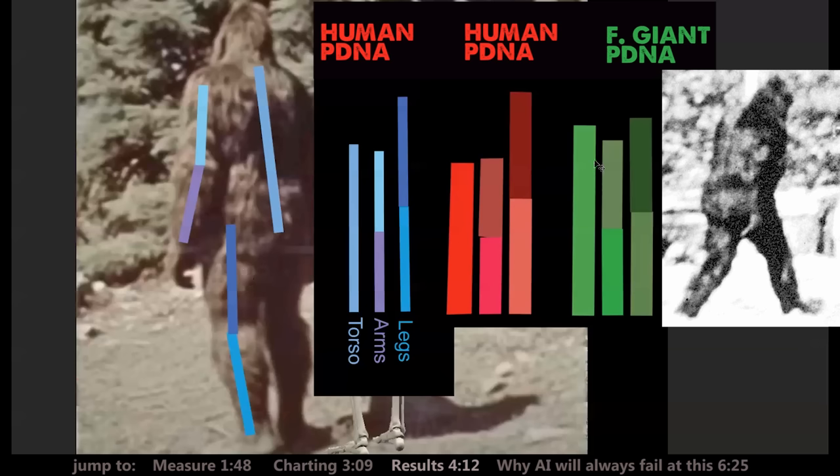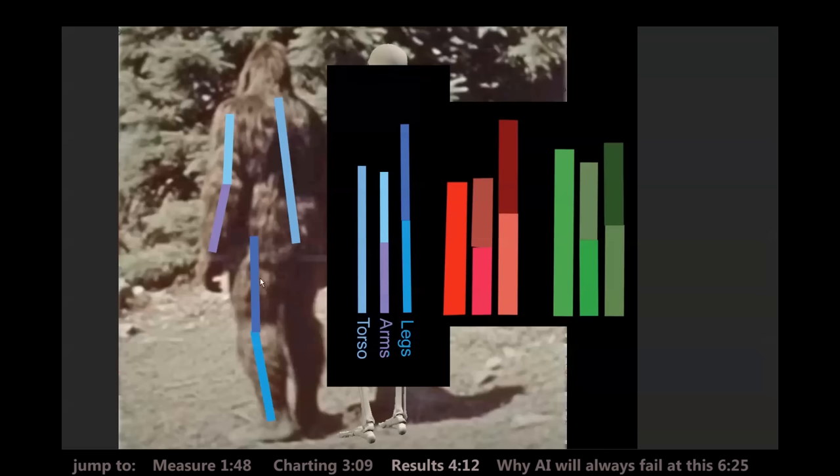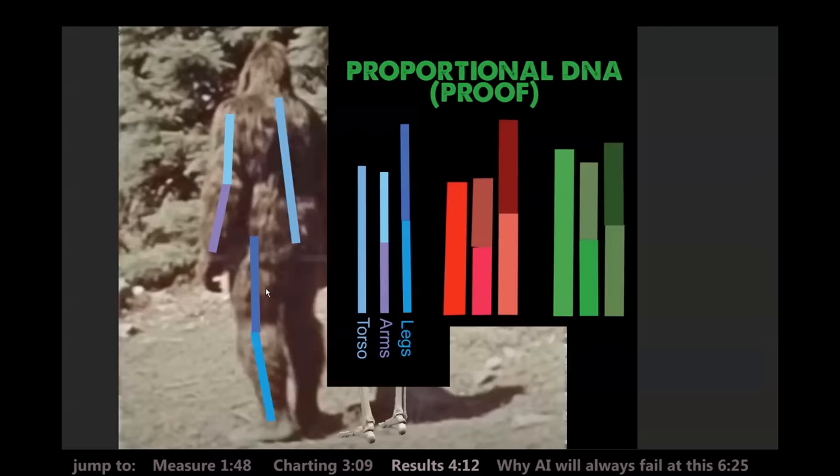Okay, so you hoaxers thinking you're cool, thinking you're clever using artificial intelligence to fake a Bigfoot photo. First, photos don't really count because they've always been much easier to manipulate than videos. But now they can be easily proven a fake in like two or three minutes just by using my proportional DNA.